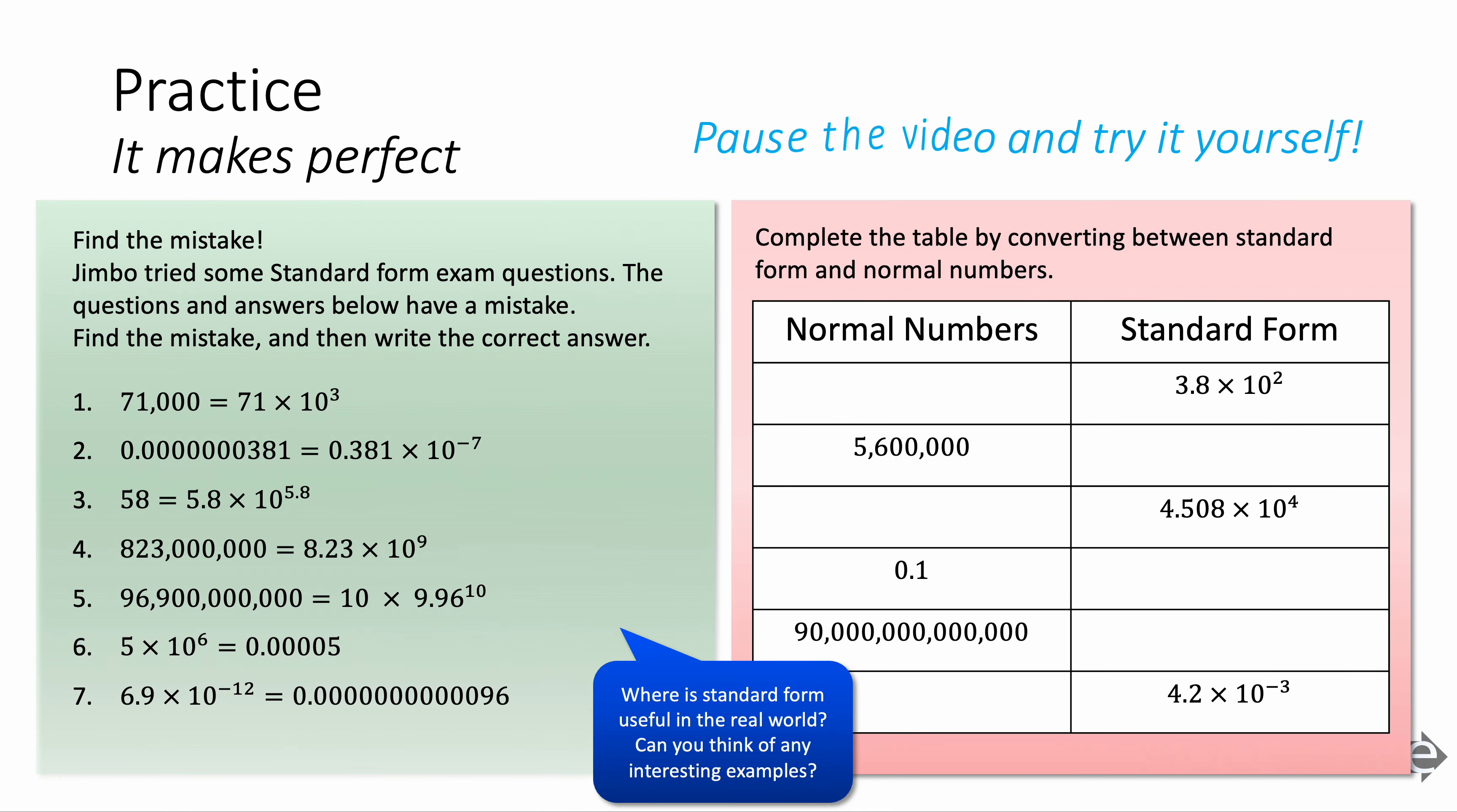And we've done. You can now notice that the positive powers make big numbers and the negative powers make small decimals. So look at the one on the top, that is a positive power, it makes a big number, whereas the negative power makes a small decimal.